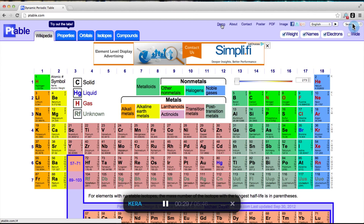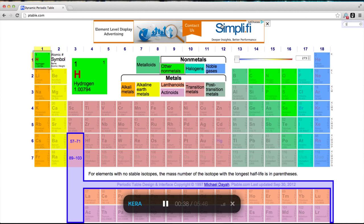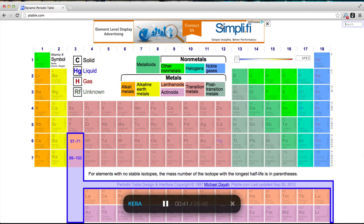The search box at top right accepts symbols, names, atomic numbers, or advanced expressions. Selecting the box dims the table to prepare to show matches. If I enter 111, you can see it first shows hydrogen, then sodium, then roentgenium.